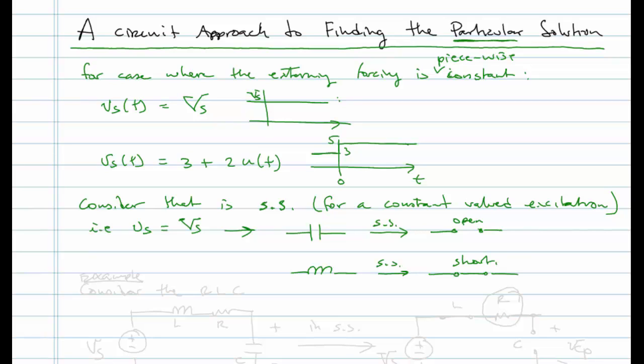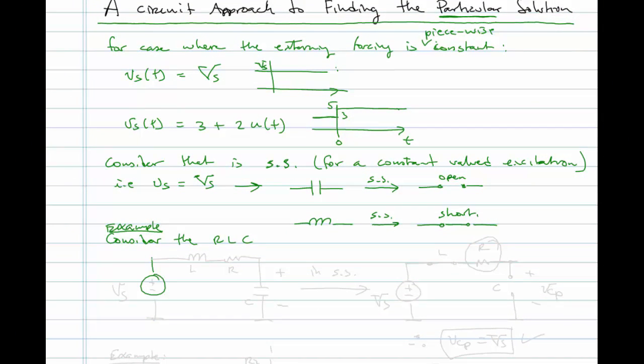So let's consider the RLC circuit. I'll just do an example here. Consider the RLC that we had previously. We had Vs, R or L, RC. I swapped the R and L around, but that doesn't make a difference. What we'll do is we'll redraw this in steady state where the inductor will become a short and the cap will become an open. And the question is, what is the particular solution, Vc of P?